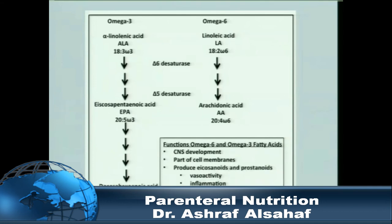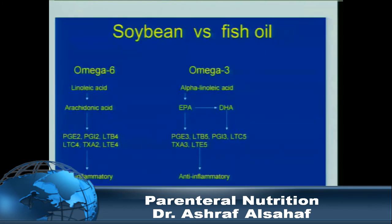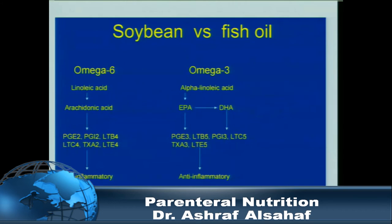Regarding the type of lipid used in TPN — there is omega-3 and omega-6. We need these for CNS development, cell membranes, vasoactivity, and inflammation. Omega-6 is pro-inflammatory through the arachidonic acid pathway, while omega-3 is anti-inflammatory. Earlier TPN preparations had more omega-6 with little or no omega-3. Fish oil provides omega-3. Now the third generation of lipid emulsions contains a balanced mix that minimizes inflammation risk for the liver.